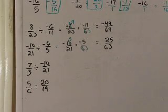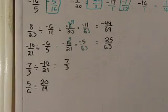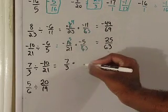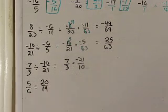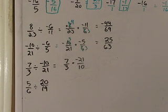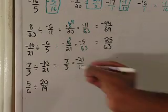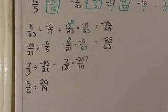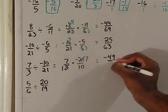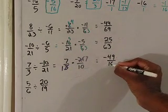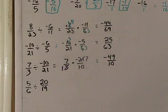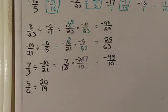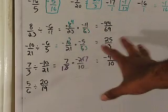Next: 7 over 3 divided by negative 10 over 11. Get the reciprocal of the fraction behind the division symbol, so that becomes 7 over 3 times negative 11 over 10. Look for common factors: negative 21 and 3 are both divisible by 3 — wait, 3 divided by 3 is 1 and 21 divided by 3 is 7. So 7 times negative 7 is negative 49 in the numerator, and 1 times 10 is 10 in the denominator. You could turn it to a mixed number, leave it as an improper fraction, or convert to a decimal — we'll leave it as negative 49 over 10.